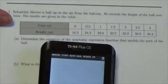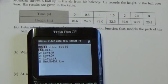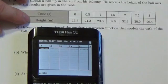So the first thing we've got to do is get the data in there. So here's the calculator. We press stat, edit, and we're going to put the time in list one and the height in list two.